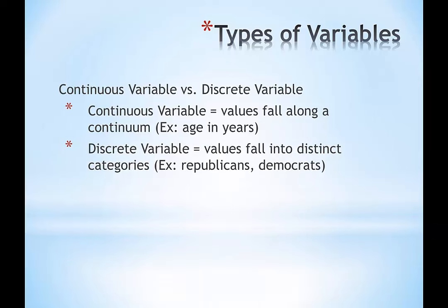Discrete variables fall in distinct categories, and this distinction is kind of fuzzy at times. If I were to ask about your political affiliation on a survey and give you three checkboxes—Republican, Democrat, or Independent—that's a discrete variable where you're placing yourself into one category. There's not a continuum. We could think about a continuum for political affiliation, like liberal to conservative, where you mark yourself on a line. But if you're checking a box and placing yourself in a category, we call that a discrete variable.